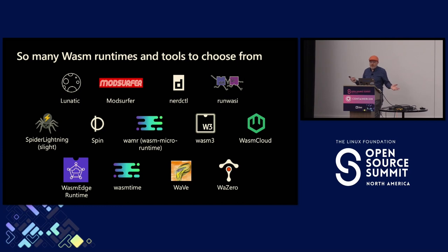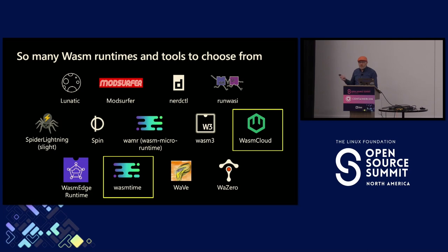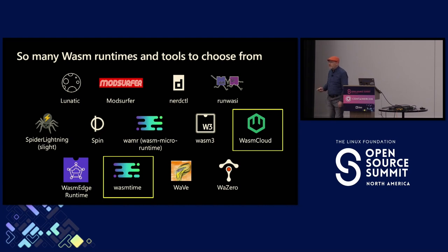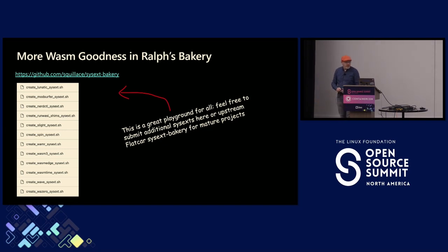Let's look at the Wasm landscape. I'm not a WebAssembly expert, but I know there are a lot of projects out there and new ones all the time. We were just at KubeCon and SpinCube was announced. We've got a couple of these which are already in the main upstream Flatcar repository — you can just pull those down from the Flatcar sysext bakery. There's also a colleague of mine called Ralph Squalache who is very active in this space and has built a bunch of these sysexts — he has a fork of the sysext bakery. If you want to go play with them, all of those other projects have sysexts for them as well. Over time we'll probably move some of these into upstream as this very fast-moving space evolves.